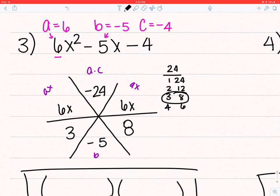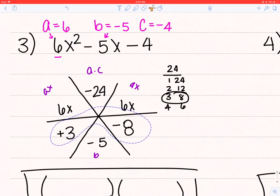Now because it's negative on top, it's going to be opposite signs, and the bigger number has to be the same sign as the bottom. So I'm going to have negative 8, positive 3. Now make sure you check this. 3 times negative 8 is negative 24, and 3 plus negative 8 is negative 5. So I can proceed.